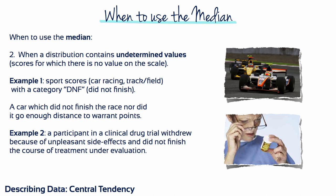The second situation where the median is better than the mean is when a distribution contains undetermined values. In other words, scores for which there is no value on the scale. In example one, sports scores, like in car racing or track and field, that have a category of did not finish. Or in the second example, a participant in a clinical drug trial who withdrew because of unpleasant side effects and did not finish the course of treatment under evaluation. It's important that we don't just delete this person's data. If a sample is to be representative of its population, this person is indicative of other people who are unlikely to tolerate the drug's side effects. This is very valuable information, but not something that can be communicated by the mean.